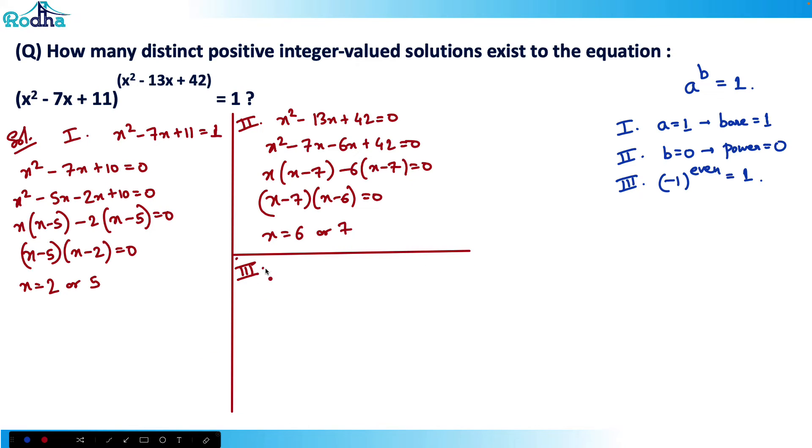Third condition: base equals minus 1. So x² - 7x + 11 = -1, which means x² - 7x + 12 = 0. Breaking into 4 and 3: x² - 4x - 3x + 12 = 0. Factoring: x(x - 4) - 3(x - 4) = 0, giving (x - 4)(x - 3) = 0. So x can be 3 or 4.